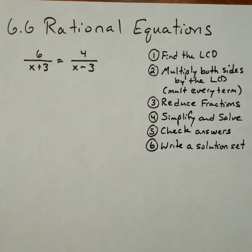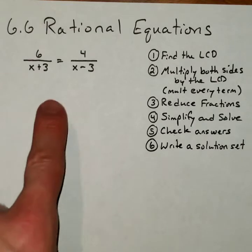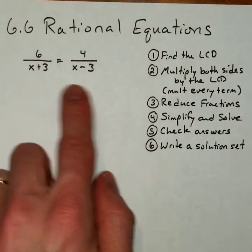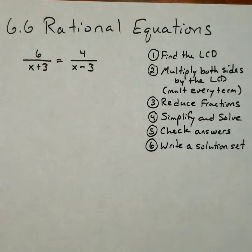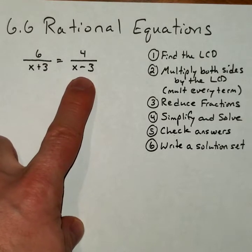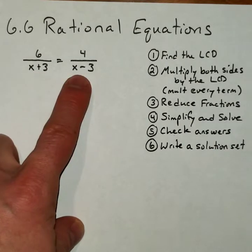All right, so I'm going to run through a whole bunch of examples now, just so you can see how these problems work, the different variations, and what to do with checking your answer when it really matters. Okay, so in this first example, I've written down the six steps that we're going to need. In this first example, we need to first find the LCD. Well, here we have two denominators, x plus 3 and x minus 3, and their product, because they have no factor in common, their product is going to be the LCD.